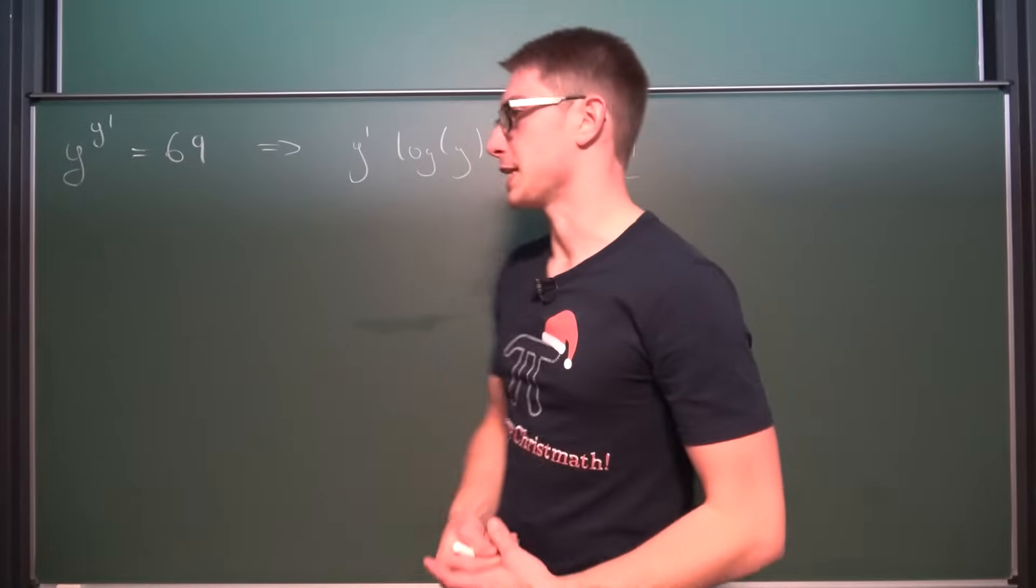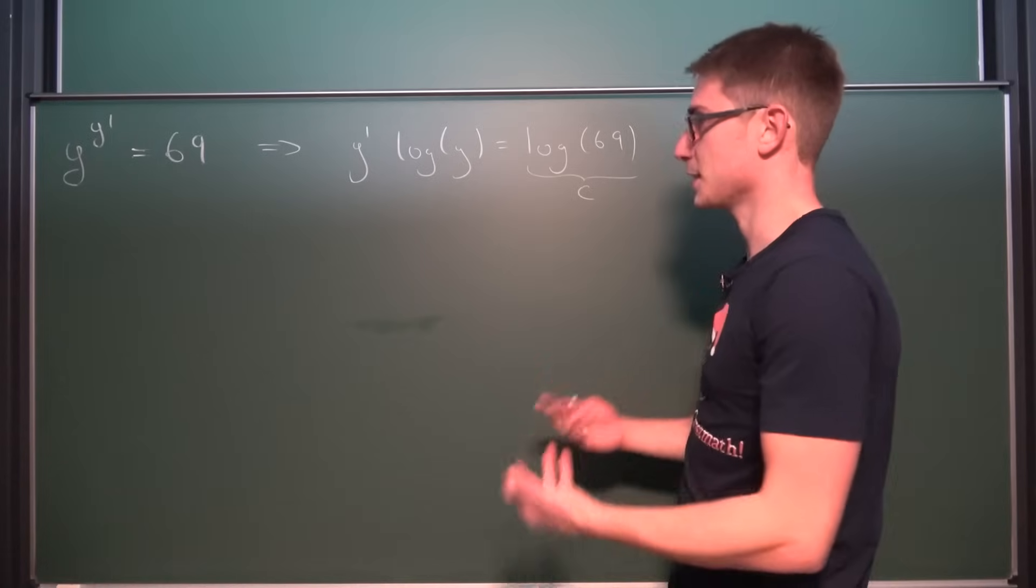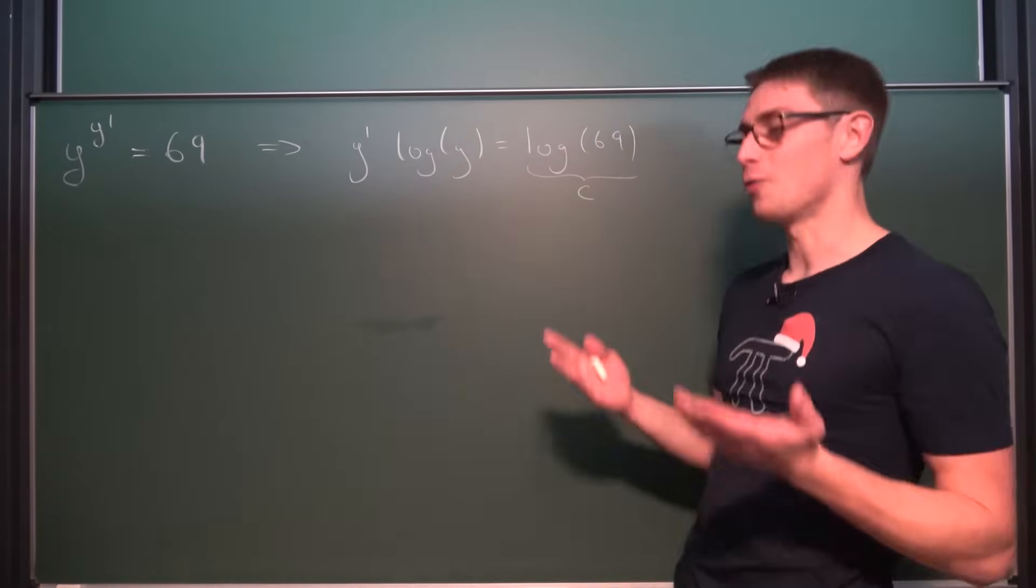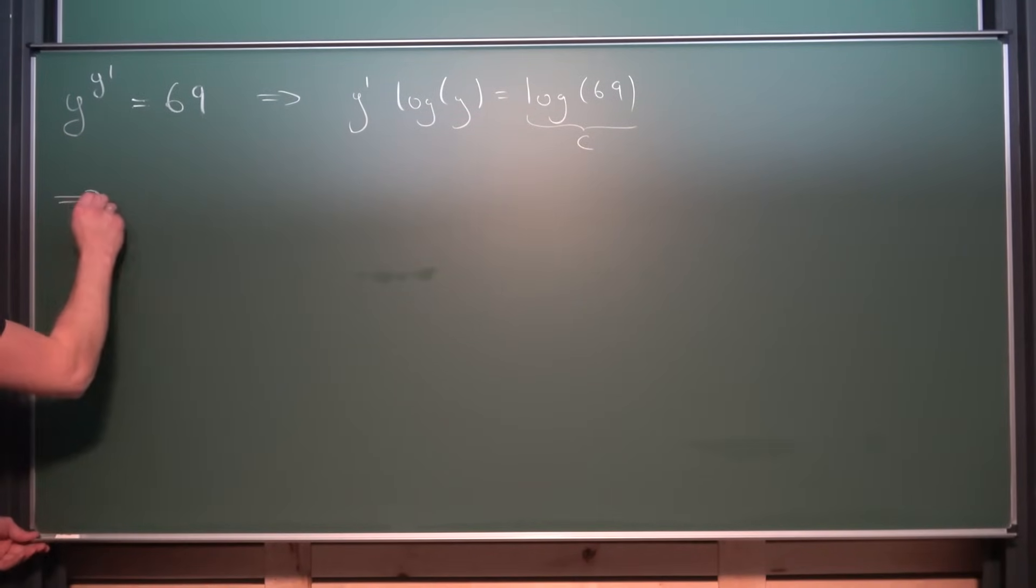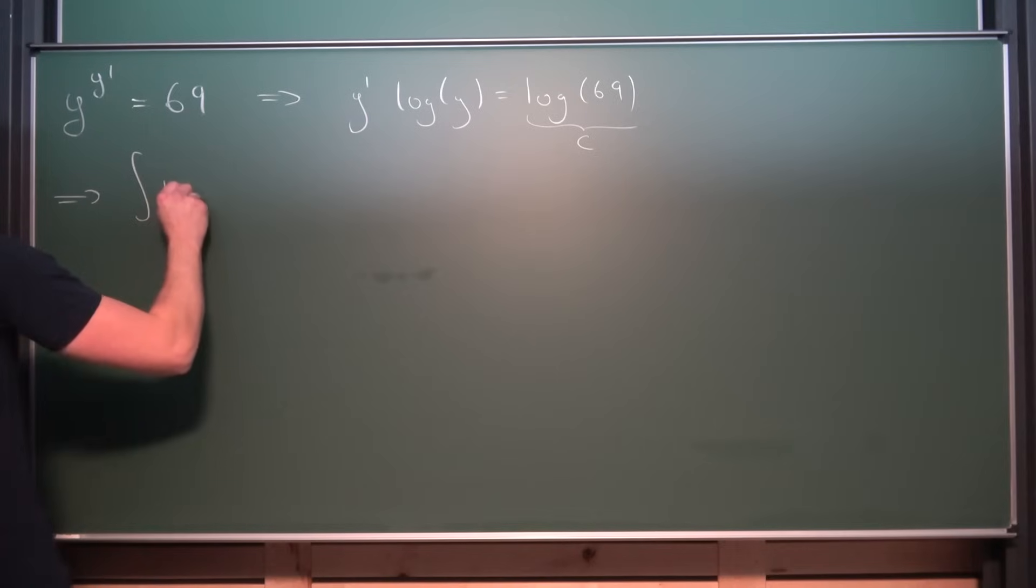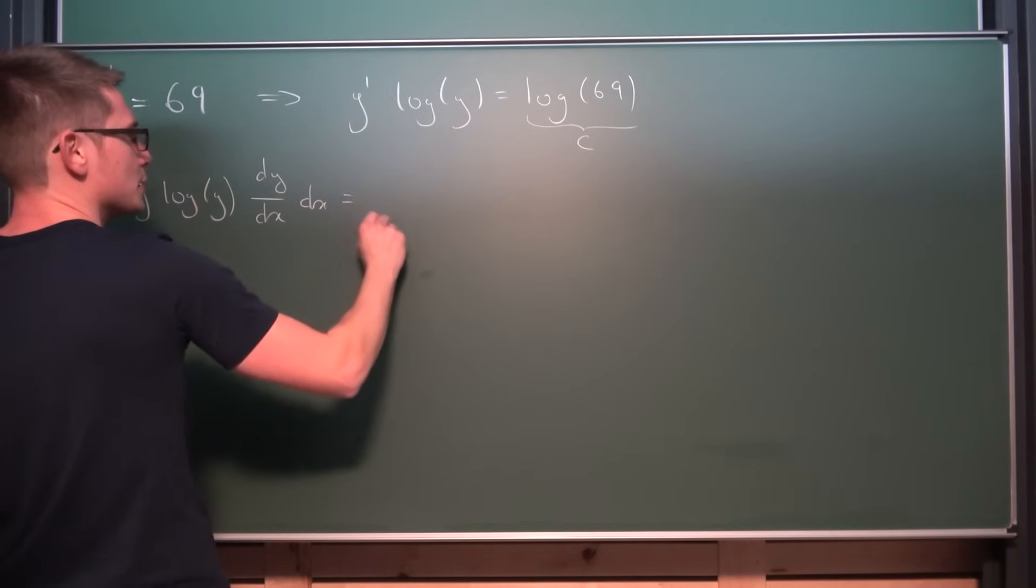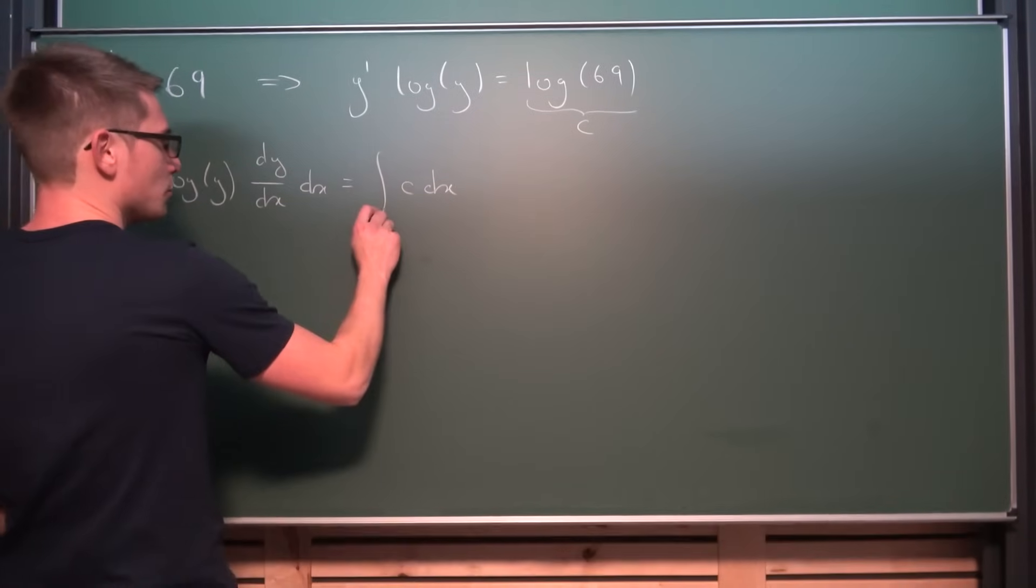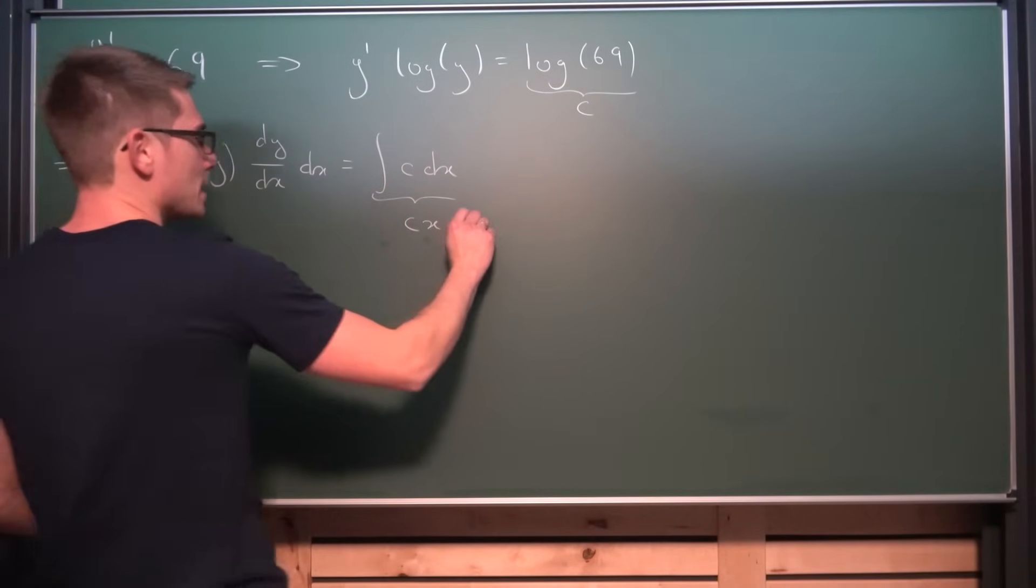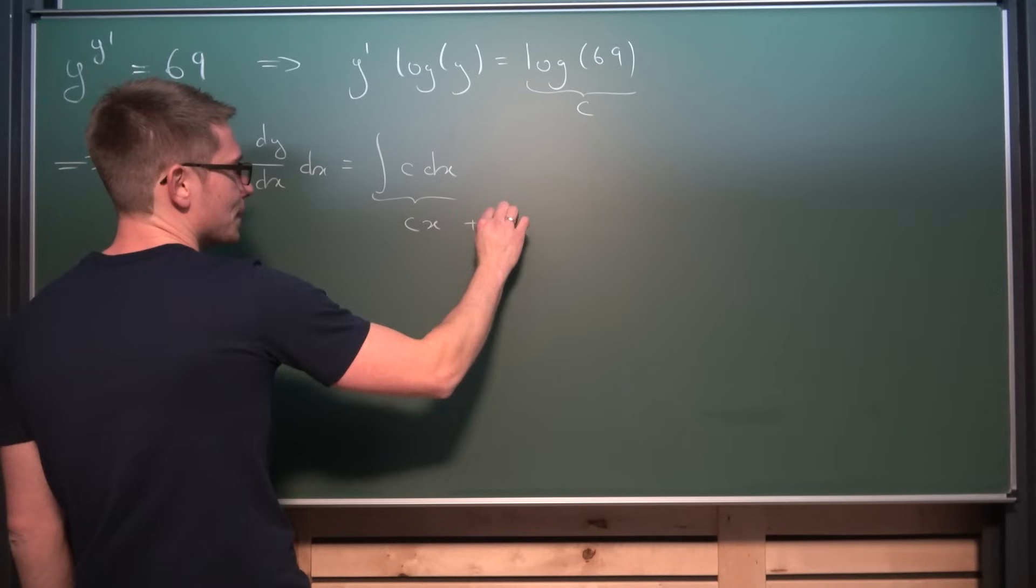How can you proceed now? So we want to solve this differential equation. And the best way to do so is by using integration. Because that's the counterpart of doing derivatives. So we are gonna integrate both sides with respect to x for now. And what we're gonna end up with is the integral of the logarithm of y times, and this thing right here is nothing other than dy dx. Integrate with respect to x is equal to the integral of c dx. Now this right here is very easy to solve. Obviously this is just our constant times x plus some arbitrary constant kappa.